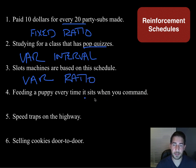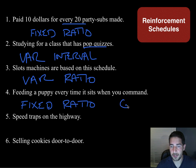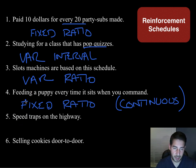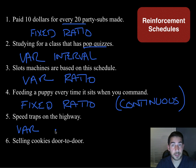Feeding a puppy every time it sits down when you command — that's fixed ratio, or continuous. You might also call it continuous. Speed traps on a highway: do you know when you're going to encounter a speed trap? No. Does your behavior have anything to do with when you experience that speed trap? No, it doesn't. It's variable interval.